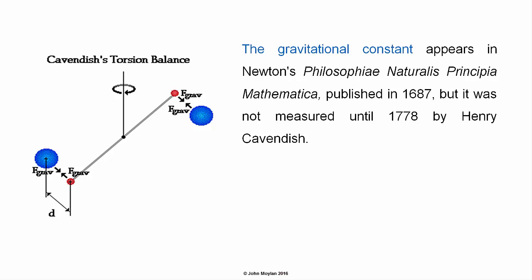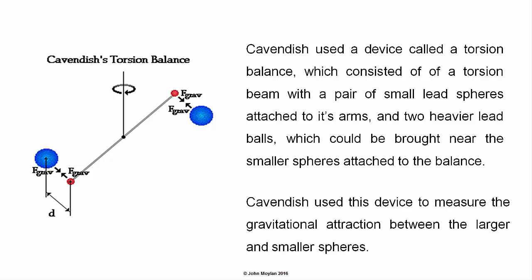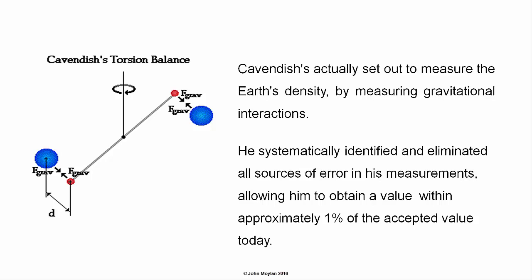The gravitational constant appears in Newton's Philosophiae Naturalis Principia Mathematica, published in 1687, but it was not measured until Henry Cavendish did so in 1778. Cavendish used a device called a torsion balance, consisting of a torsion beam with a pair of small lead spheres attached to its arms. Two heavier lead spheres were brought near the smaller spheres, and Cavendish measured the gravitational attraction between them. He actually set out to measure the Earth's density, and by systematically identifying and eliminating all sources of error, he obtained a value within 1% of the accepted value today.